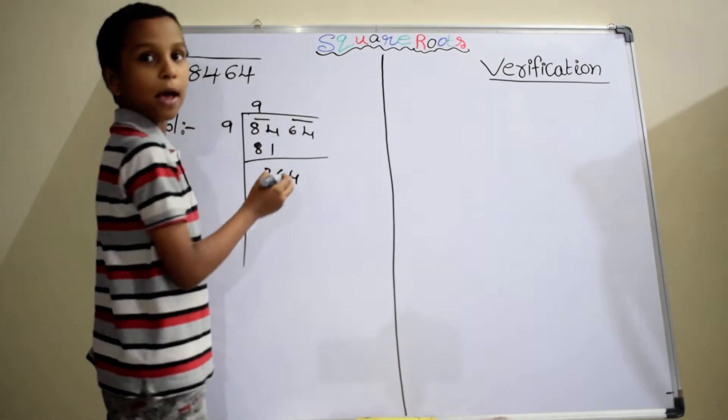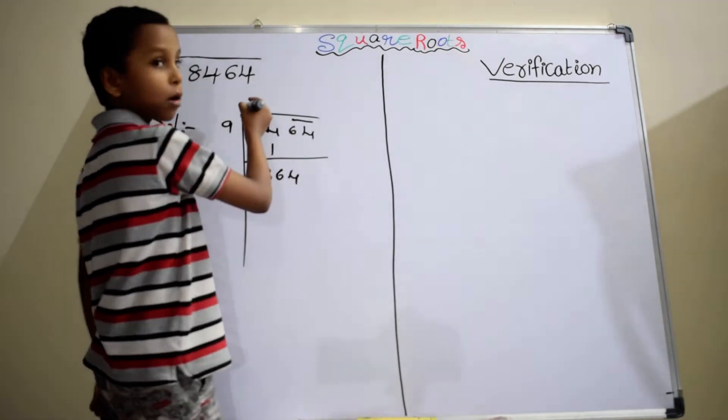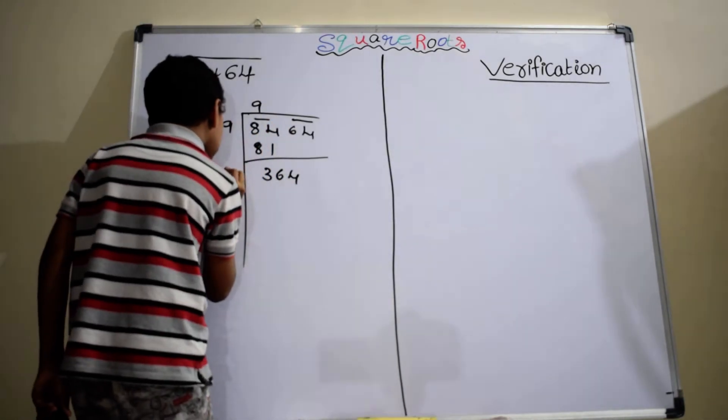In this step, we have to write the double of the coefficients, that is 18.